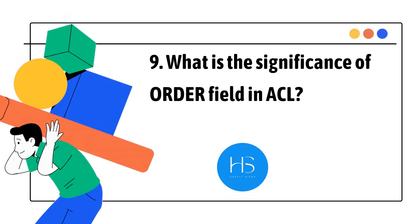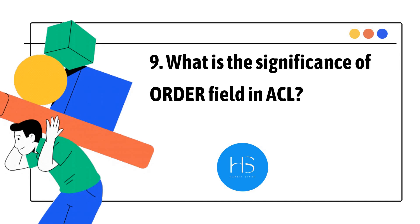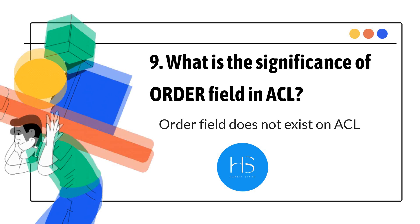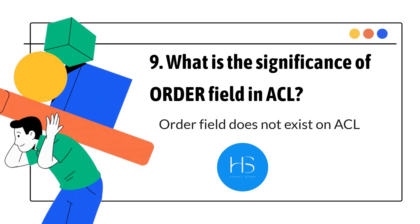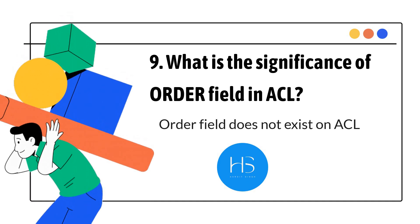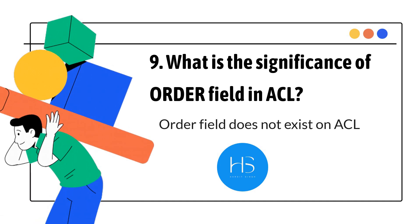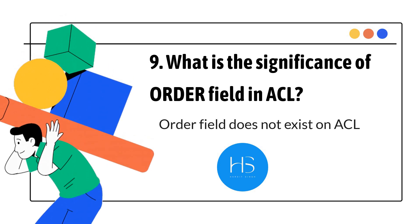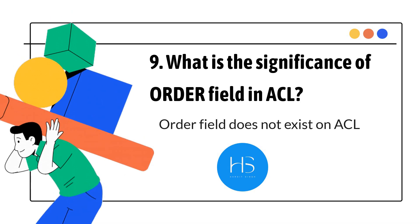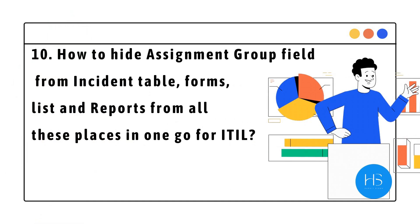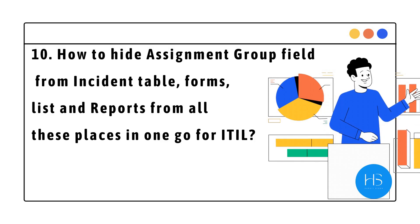The ninth question is: what is the significance of the order field in an ACL? This is a very tricky question. The answer is: the order field does not exist on an ACL. I remember an interviewer asking me this question many years back and I was confused. It's very difficult at that point in an interview because you have lots of information to process. So please always remember: ACL does not have an order field.